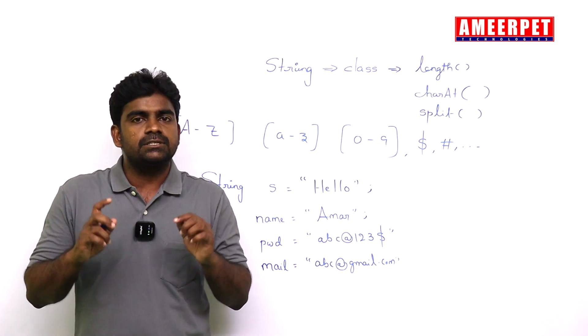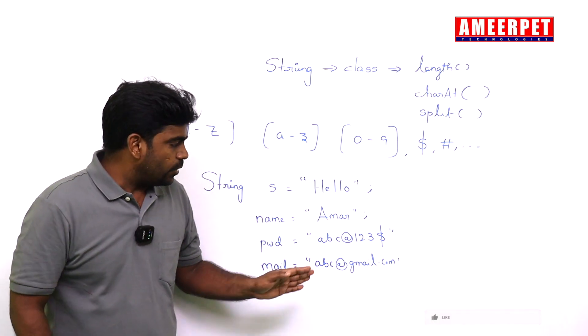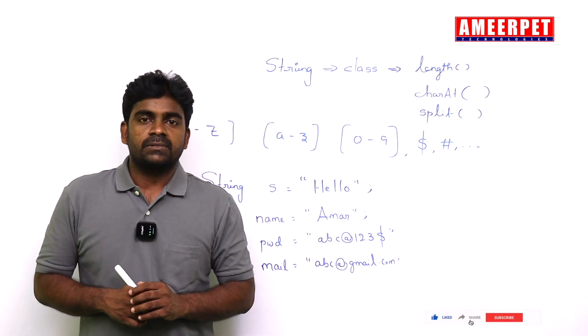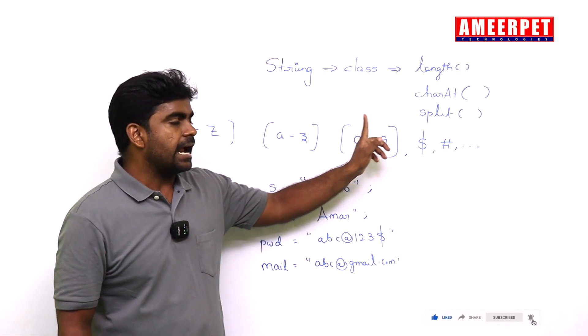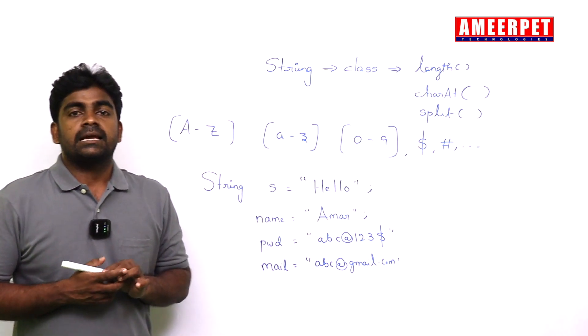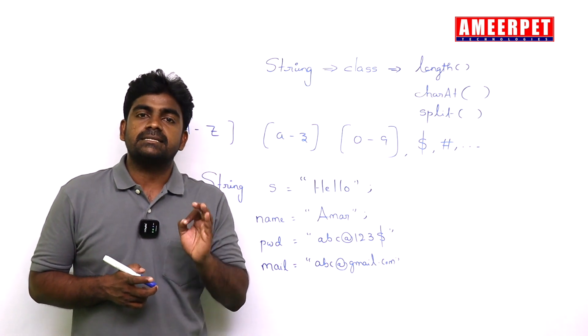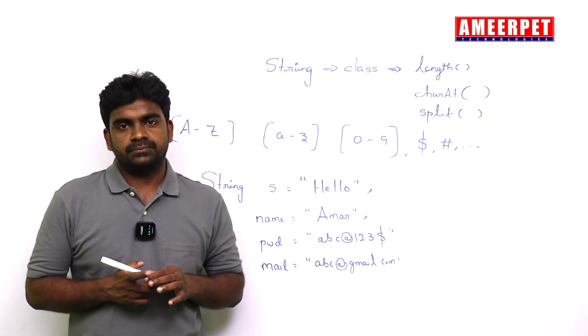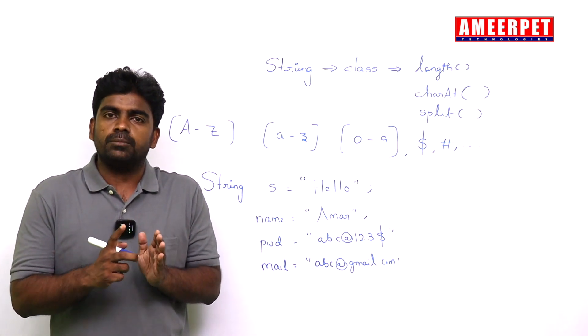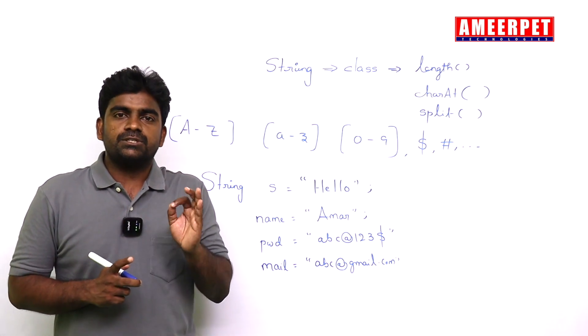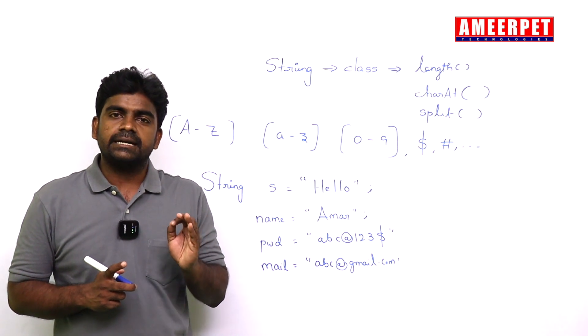String contains alphabets, digits, and symbols. In string, S must be capital letter because it is a class. In Java, class is nothing but the representation of object, so string is also called object in Java.